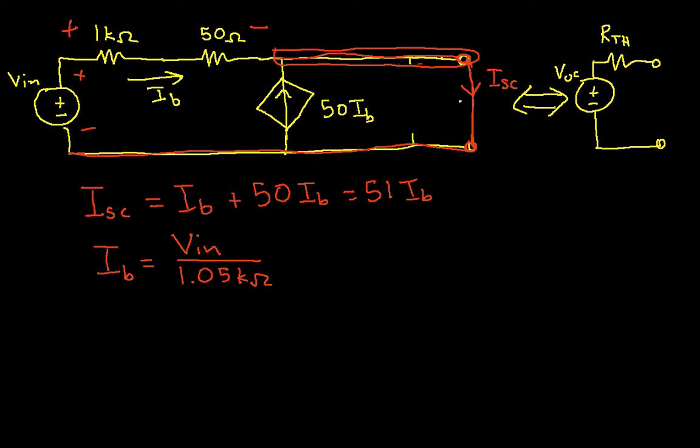So I can then say that IB is equal to VIN over 1.05k ohms. And again, the 1.05 comes from adding this guy and this guy together. So that means that the short circuit current will be 51 divided by 1.05k ohms times VIN.